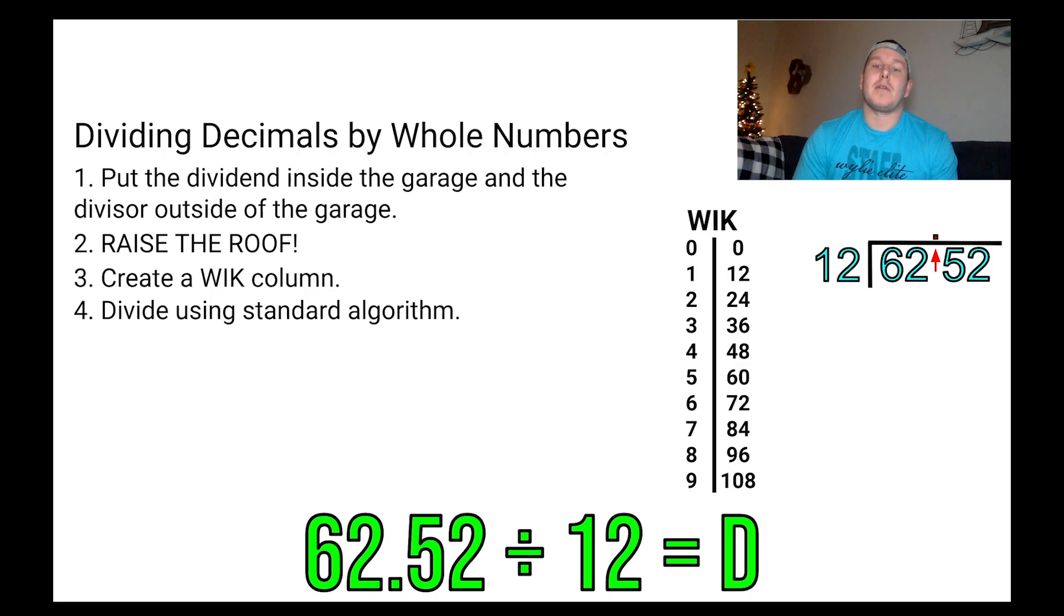But we're going to divide using the standard algorithm. So what we ask ourselves is how many times can 12 fit into 6? And 12 is a bigger number than 6. So we're just going to go ahead and go to the next number. So we're going to ask ourselves, how many times does 12 fit into 62? If we look at our what I know column, the number that gets the closest without going over is 60, which we put a 5 on the top. So 5 times 12 will give us 60. We're going to subtract to get us 2.